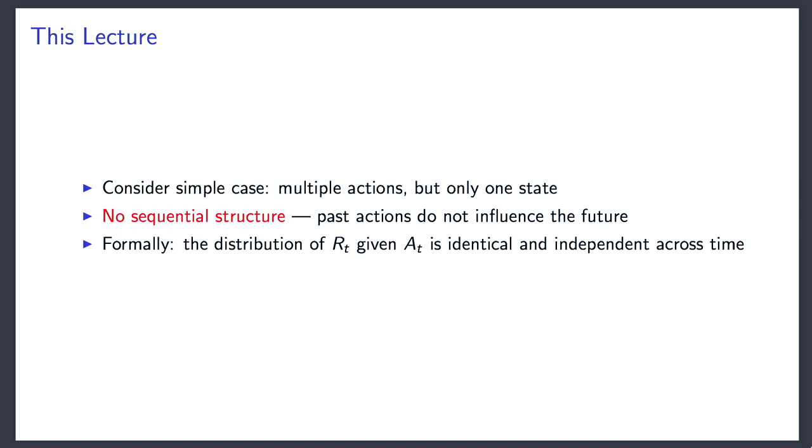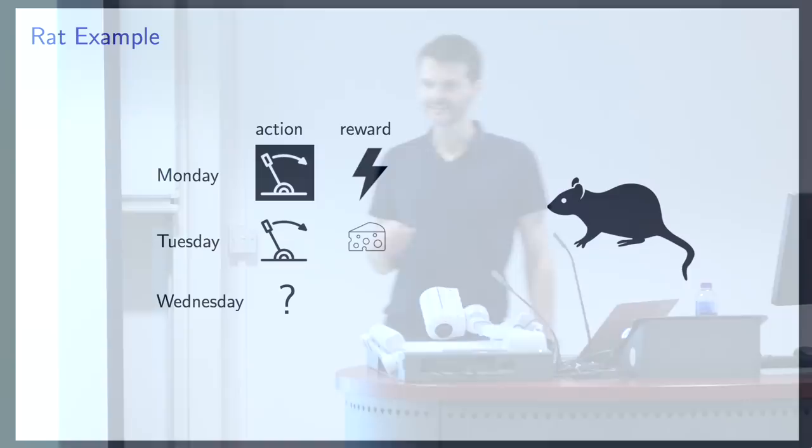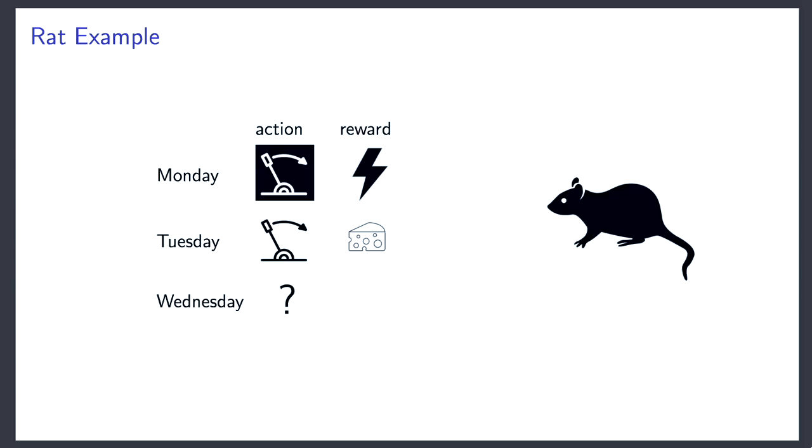Here is a simple example. Consider a rat with access to two levers — one with a black background and one with a white background. On Monday, the rat pulls the black lever and gets a shock. On Tuesday, it pulls the white lever and a piece of cheese falls out — the rat is happy. On Wednesday the rat is given the choice again. What should it do?